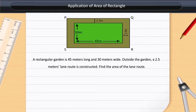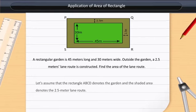Find the area of the lane route. Let's assume that the rectangle ABCD denotes the garden and the shaded area denotes the 2.5 meter lane route.